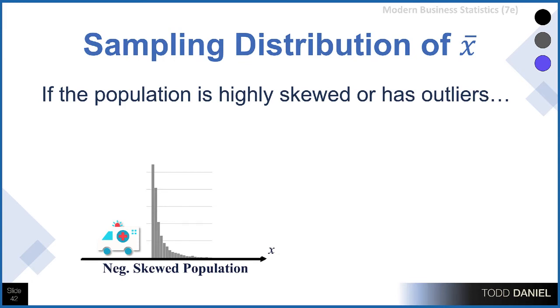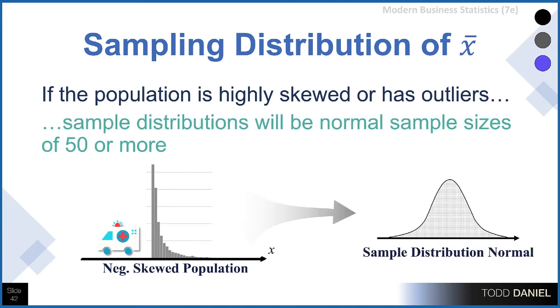In the case that you have a highly skewed population, you'll need larger sample sizes to approach normality with your sampling distribution of the mean. We might need sample sizes of 50 or 100. Therefore, it's important to know, as best you can tell, what the distribution of your population is. If you know it's skewed or has some other abnormality, adjust your sample size accordingly.